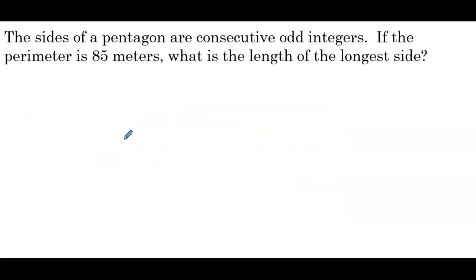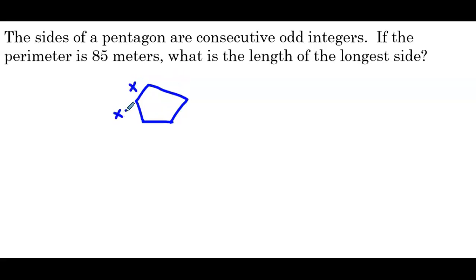The sides of a pentagon are consecutive odd integers. If the perimeter is 85 meters, what is the length of the longest side? We'll start by drawing a pentagon, which is a five-sided shape. The sides are consecutive odd integers, so we'll define the smallest side as x, then x plus 2, x plus 4, x plus 6, and x plus 8 — we've now defined all five sides of the pentagon.